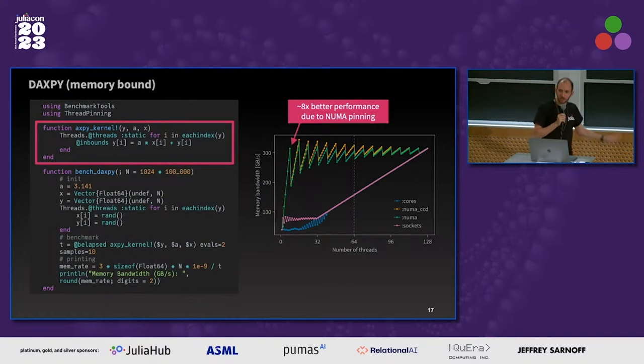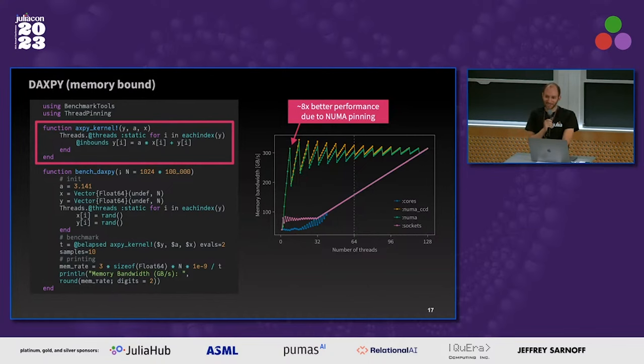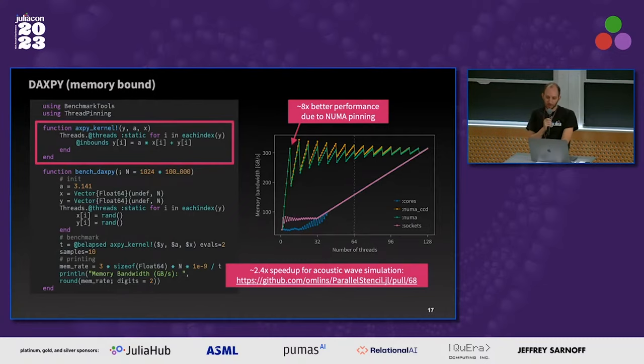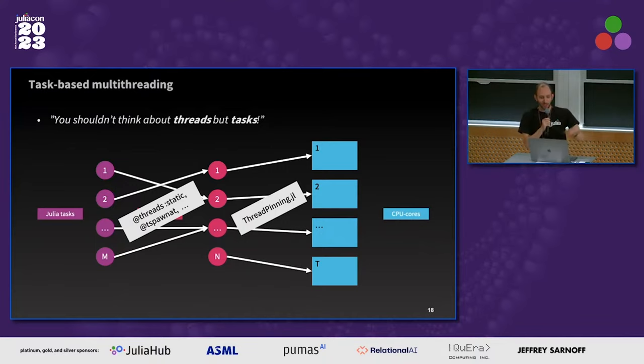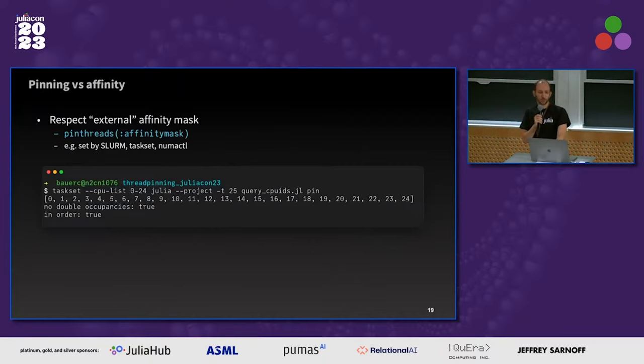Here's a little benchmark — it's an entirely memory-bound operation, just a DAXPY. In some cases, for example when you run with eight threads, just by changing the pinning you get an eight times performance benefit because that system has eight NUMA domains. In a real application, we saw something like a 2.4x speedup. One thing to mention: ThreadPinning only pins threads to cores — it doesn't pin tasks to threads. Julia has task-based multithreading, so in my example I used @threads :static to map that. Thread pinning only pins threads.